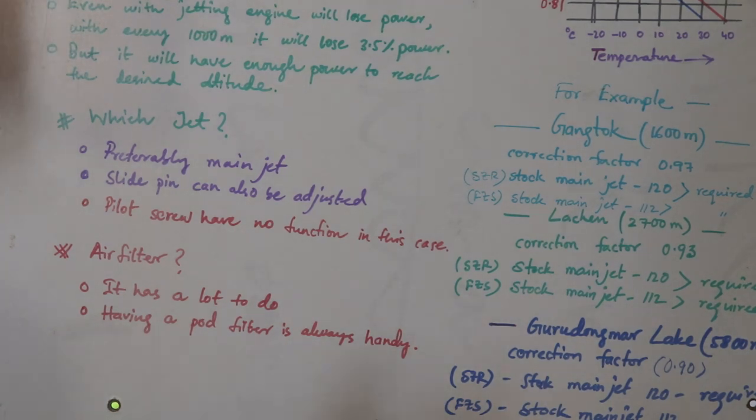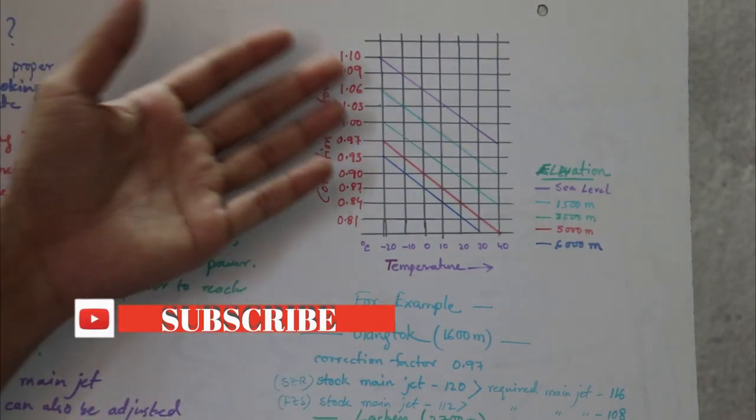It helped me a lot and it is always handy to carry a uni filter with you. You can always check it and replace the stock paper filter which is very much restricted to a more breathable one like K&N or Uni or Moxi, anything like that. If you are not very comfortable in rejetting or changing main jet on the go, then you can change the air filter and give it a try.